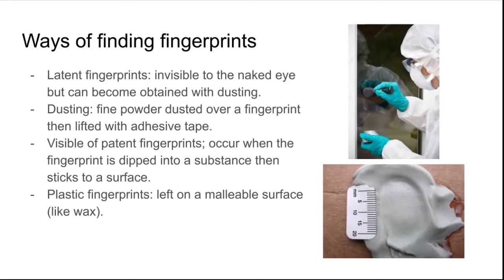Visible or patent fingerprints occur when the fingerprint is dipped into a substance, and then that substance sticks to a surface in the shape of the fingerprint — for instance, if the finger was dipped in chalk and then touched a piece of paper. Plastic fingerprints are left when the finger touches a malleable surface, which is something that can be squished and molded, like wax.